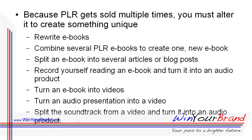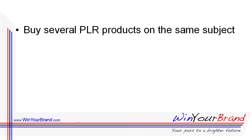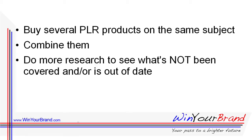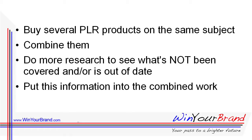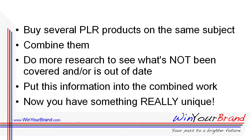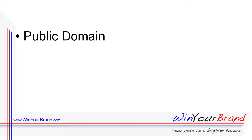Conversely, you can split the soundtrack from a video and turn it into an audio product — simply extract it and sell it as an MP3. One thing you can do to make a truly unique product from PLR is to buy several PLR products on the same subject — probably best with ebooks — combine them, and then do some more research to see what hasn't been covered or might be out of date. Put this new information into the combined work, and now you have something really unique that nobody else has. You can sell it much more quickly than if you had to research every single part of the topic from scratch.